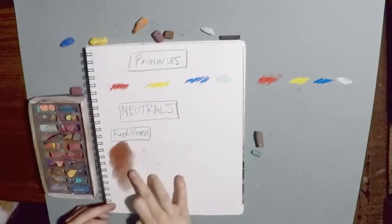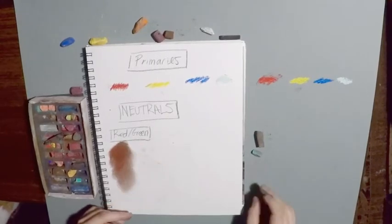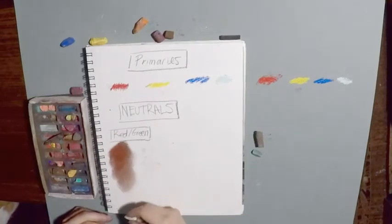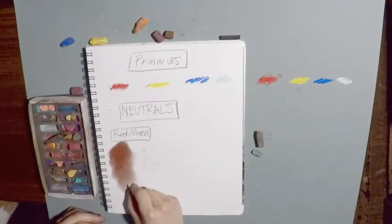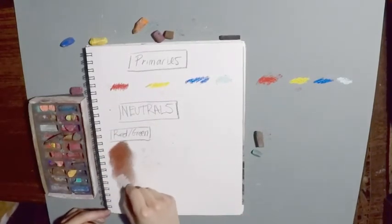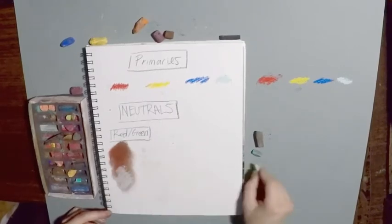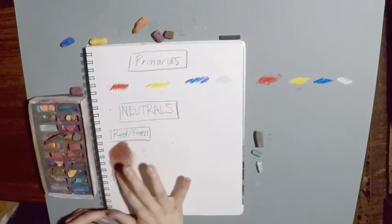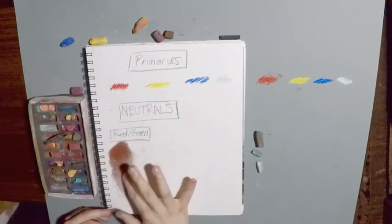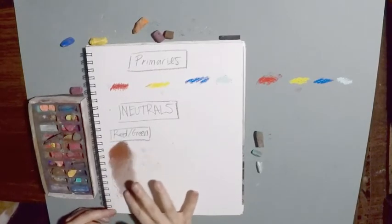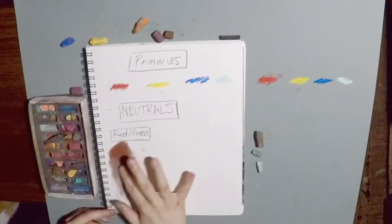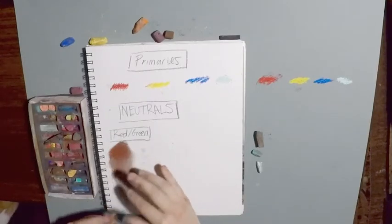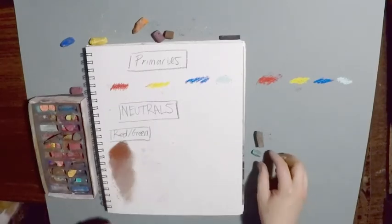I'm also going to show you how when you add white, we'll do a kind of gradient. Adding some white is going to give us some lighter skin tones. This can be a reddish, blushing sort of skin tone.